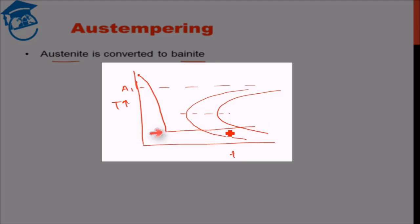Then what we have is bainite start and bainite finish. Thereby we form bainite and once we have formed 100% bainite, then we cool the material. This process of formation of bainite from austenite by isothermally holding it in the bainitic range gives us bainite. And this process is called austempering process.